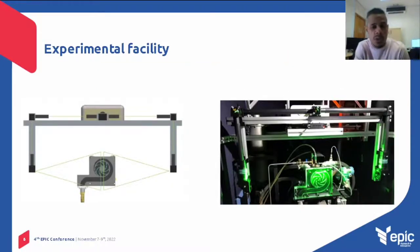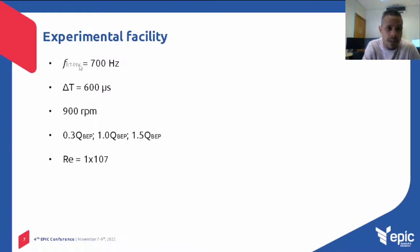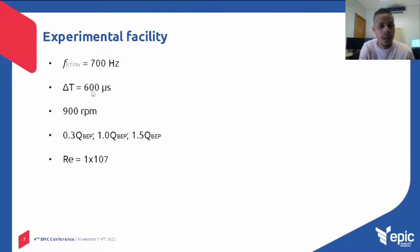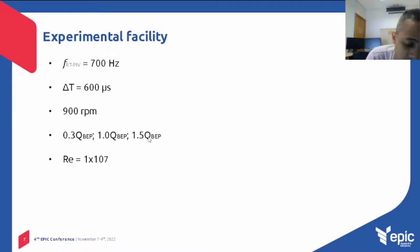In addition, a time-resolved PIV system was used to obtain centrifugal pump velocity fields, as presented here. The system operating conditions in this experiment were: acquisition frequency equal to 700 Hz, temporal spacing between frames of 600 microseconds, pump rotational speed of 900 RPM, flow rate varied at 0.3 BEP, 1 BEP, and 1.5 BEP, and the Reynolds number was equal to 1 million.